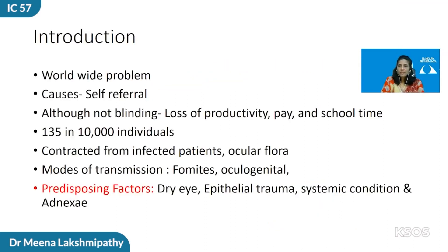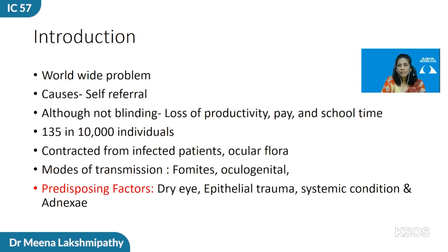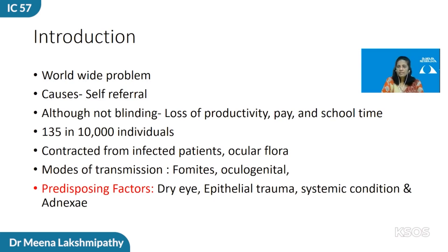Conjunctivitis is a worldwide problem and is the commonest cause of self-referral to the primary care physician and the ophthalmologist. Although not blinding, it can cause some amount of morbidity. It usually affects 135 people in 10,000, which is the only known incidence from the U.S. It's contracted from other infected patients and from adnexal-infected ocular areas. The modes of transmission are predominantly fomites and very rarely oculogenital.